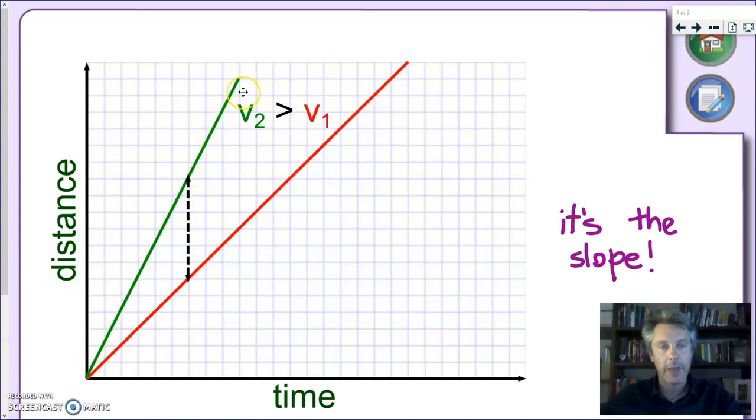We know that both of them have constant speed, but which one is bigger? And to answer this question, we have to think, what does it mean to be faster? It means that, if you start at the same time and you start at the same place, after some time, you will be ahead of the other one.